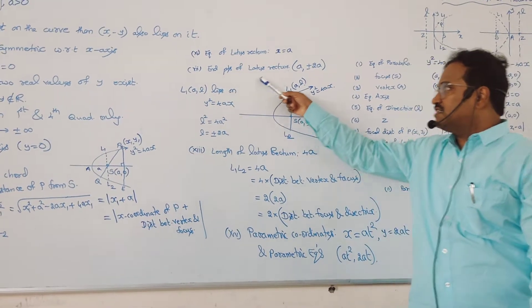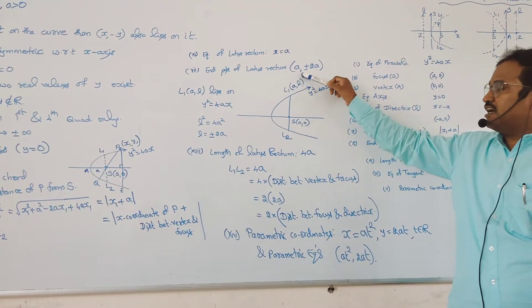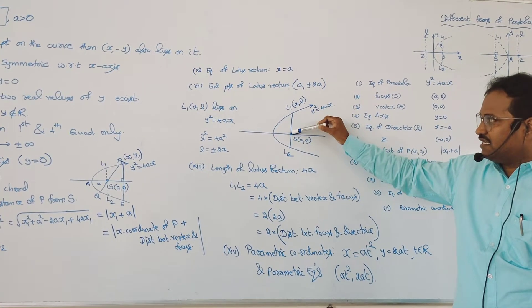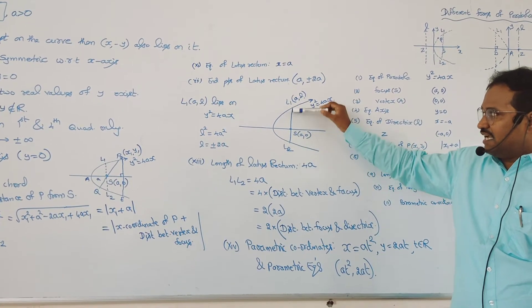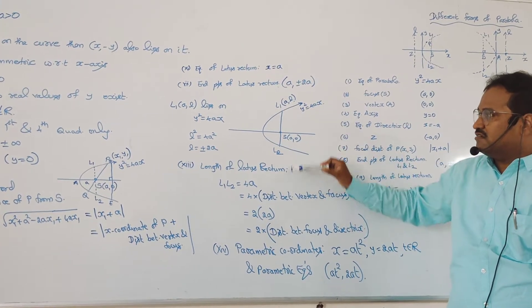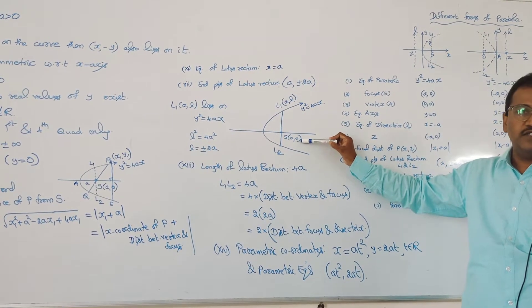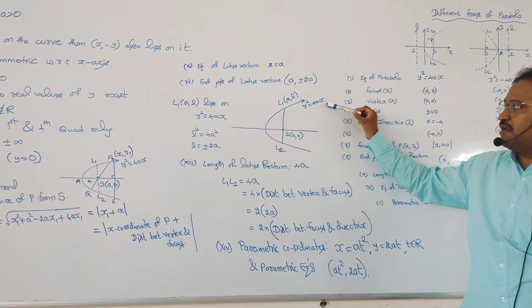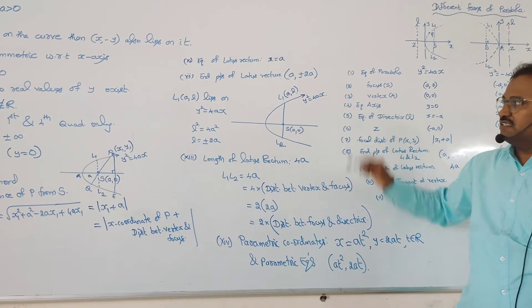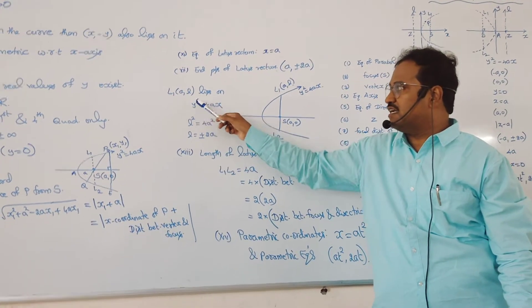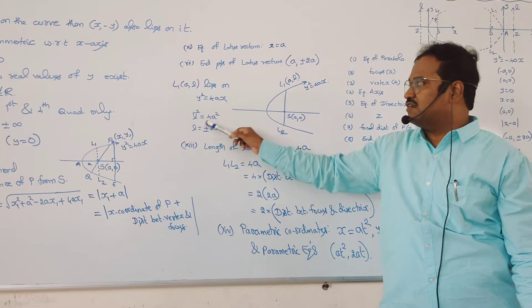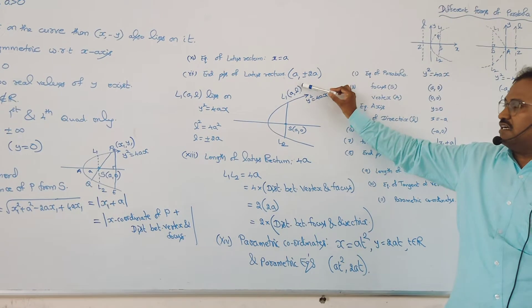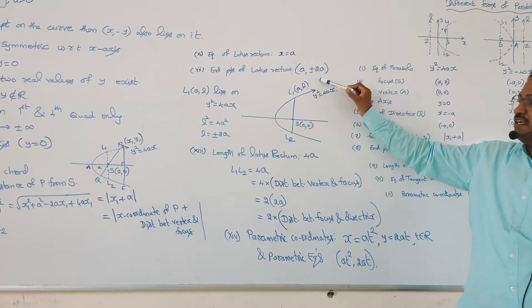Next, the endpoints of the latus rectum are (A, ±2A). Let us derive the endpoints. L₁ and L₂ are the endpoints of the latus rectum. When the focus is S = (A, 0), the coordinates of L₁ can be taken as (A, L), which lies on the parabola y² = 4Ax. That means L² = 4A², so L = ±2A. Thus the endpoints of the latus rectum are (A, ±2A).